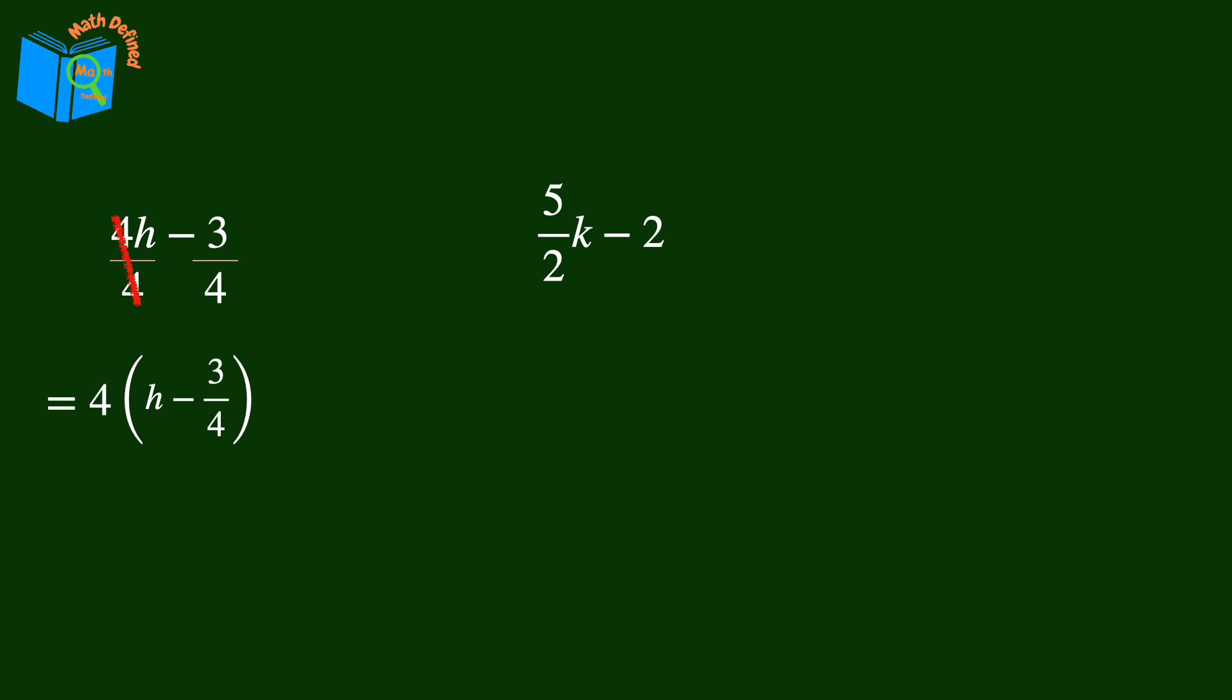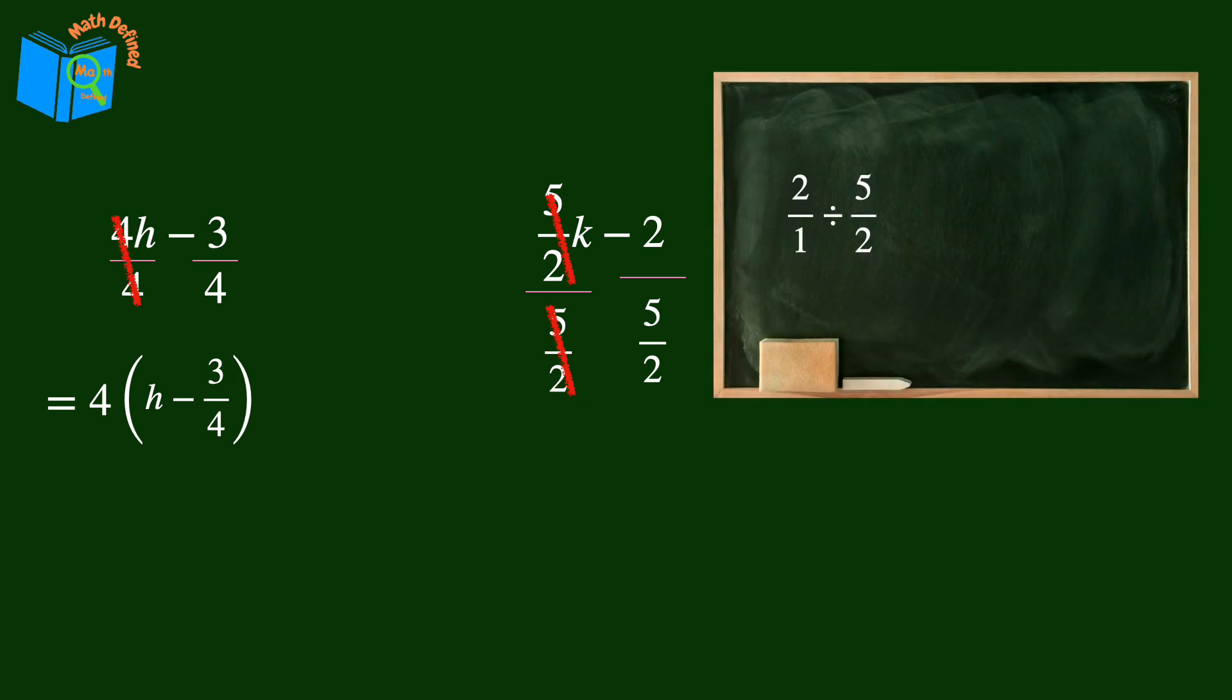Moving on, we have the expression 5 over 2k minus 2. The coefficient is 5 over 2, so we need to divide each term by 5 over 2. The 5 over 2's cancel each other out, leaving the variable k. And we'll have to divide the second term, 2 over 1, by 5 over 2.